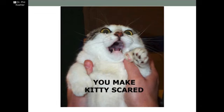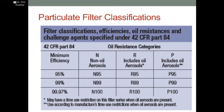What are these N, R, and T categories? N is for non-oil aerosols. R includes oil aerosols, and P also includes oil aerosols. N respirators are for non-oil; R and P would be for oil. It depends on how long you're going to be exposed as to whether you use an R or a P. Use according to manufacturer's time-use restrictions when oil particles are present — you may have a time-use restriction on the R series filters.